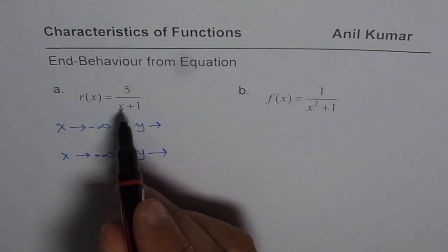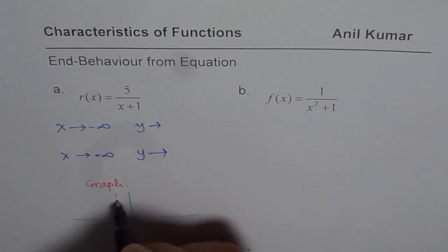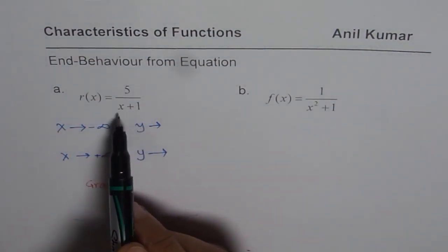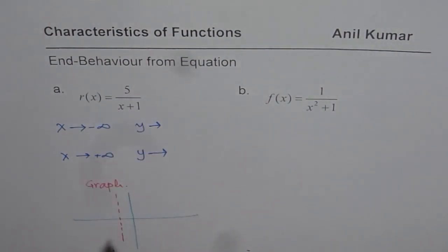It is vertical asymptote at minus 1, right? So that is how it is. Denominator, if I write x equals to minus 1, it becomes 0. So that gives you a vertical asymptote. So this vertical asymptote is for x equals to minus 1. Now we know it is a translated reciprocal function.